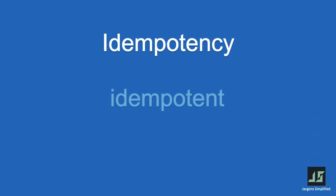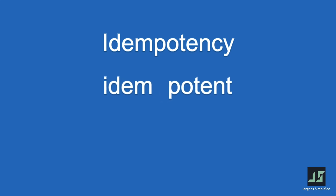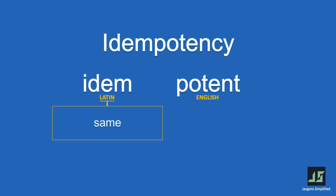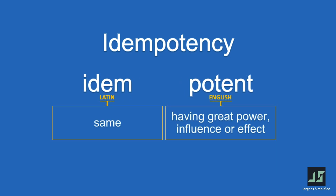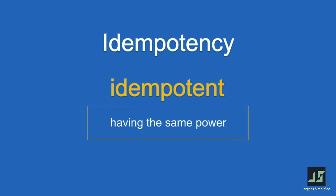What is idempotency? The term idempotency is derived from the concept of idempotent, and the term idempotent is made up of two words: the Latin word 'idem' and the English word 'potent'. Idem meaning same, and potent meaning having great power, influence, or effect — in short, power or effect. So literally, the term idempotent means having the same power or having the same effect.